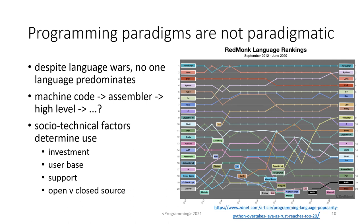So I think programming paradigms are really not paradigmatic. We watch language wars all the time but nonetheless no one language predominates. Looking at the graph on the right, it's pretty well flatlined. At the top we've got JavaScript, Java, PHP, Python, Ruby, then four brands of C: C#, C++, C, and Objective-C, and then a variety of other languages that come and go. Certainly historically we can see a trend from machine code to mnemonics in assembler to high-level languages, but nothing has since become dominant.